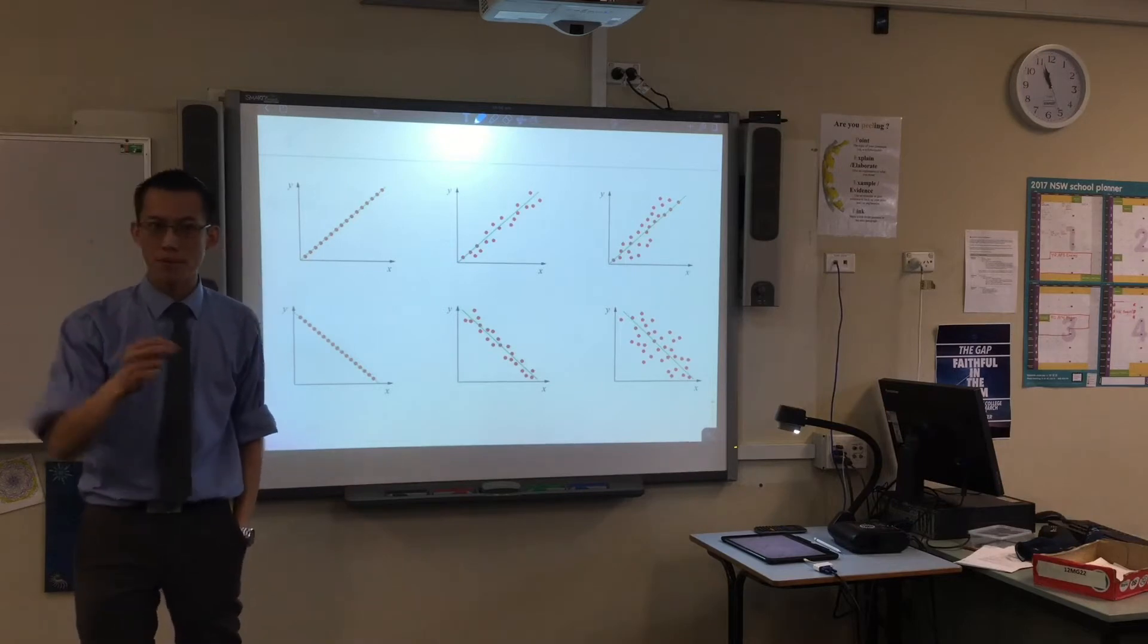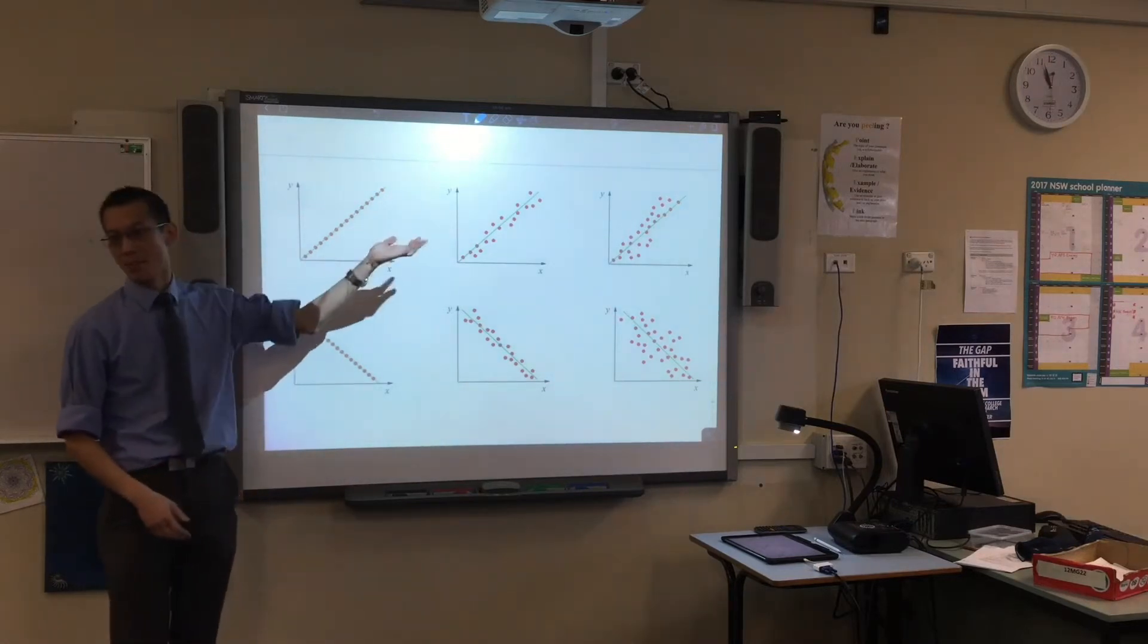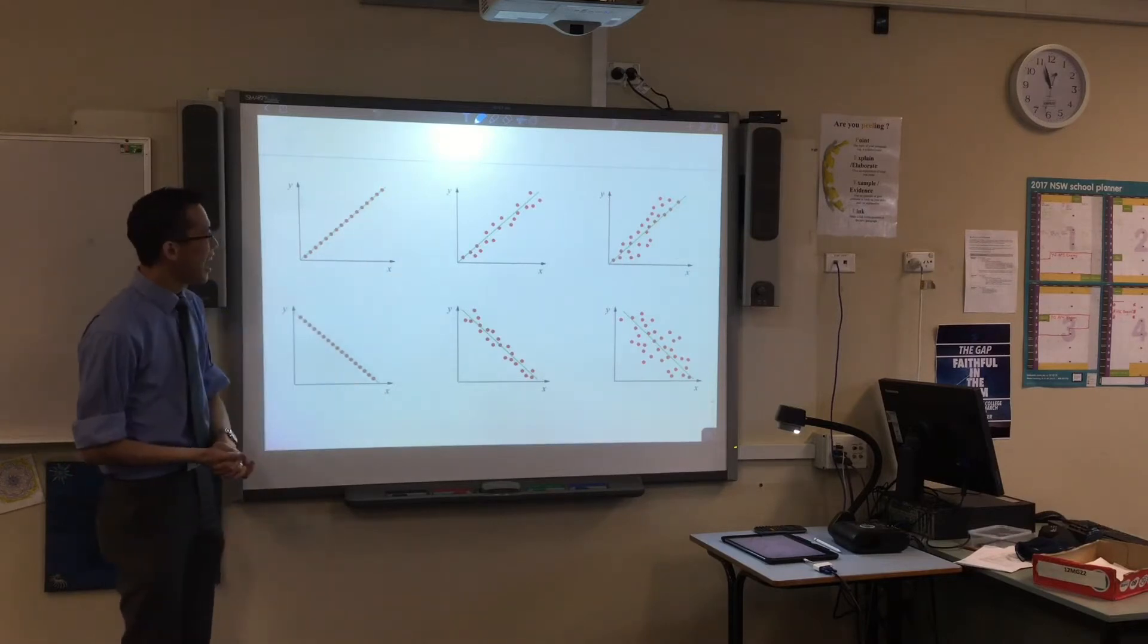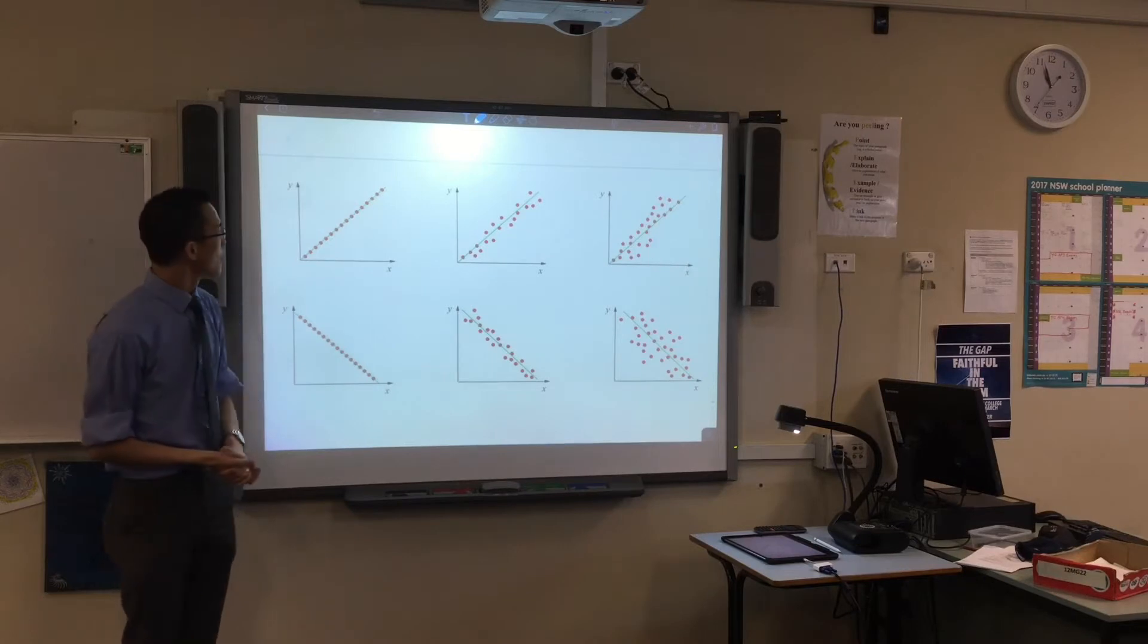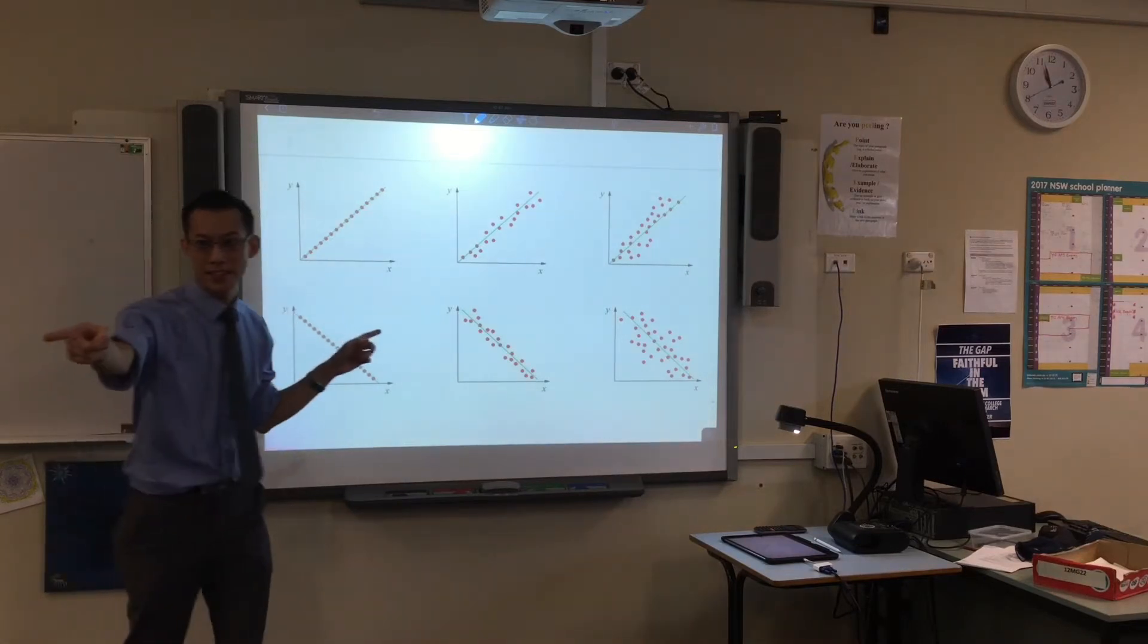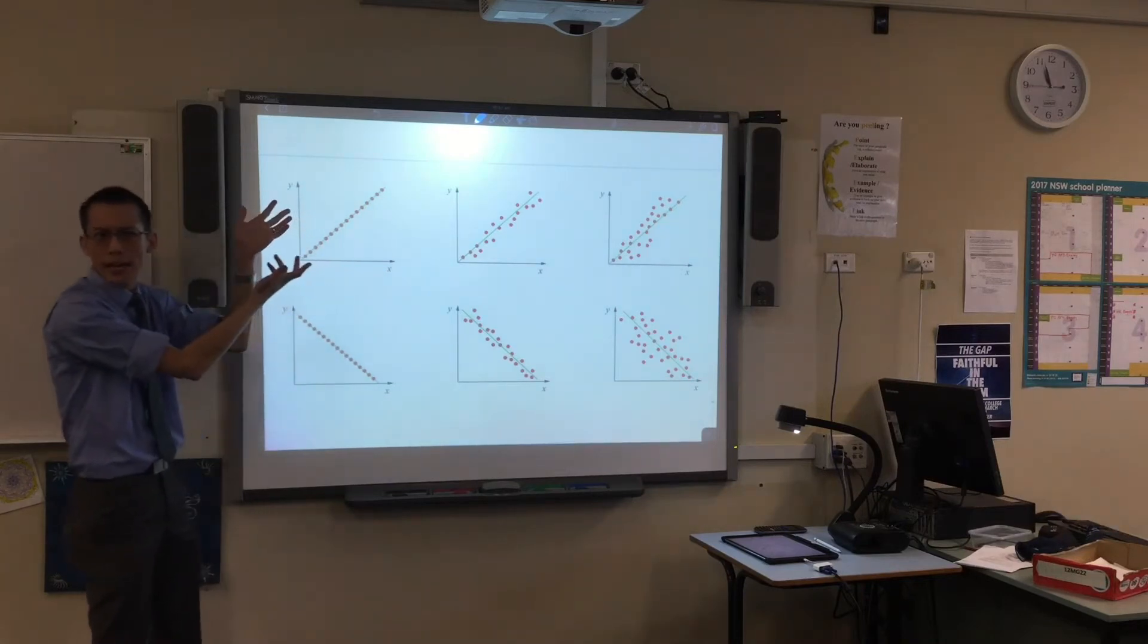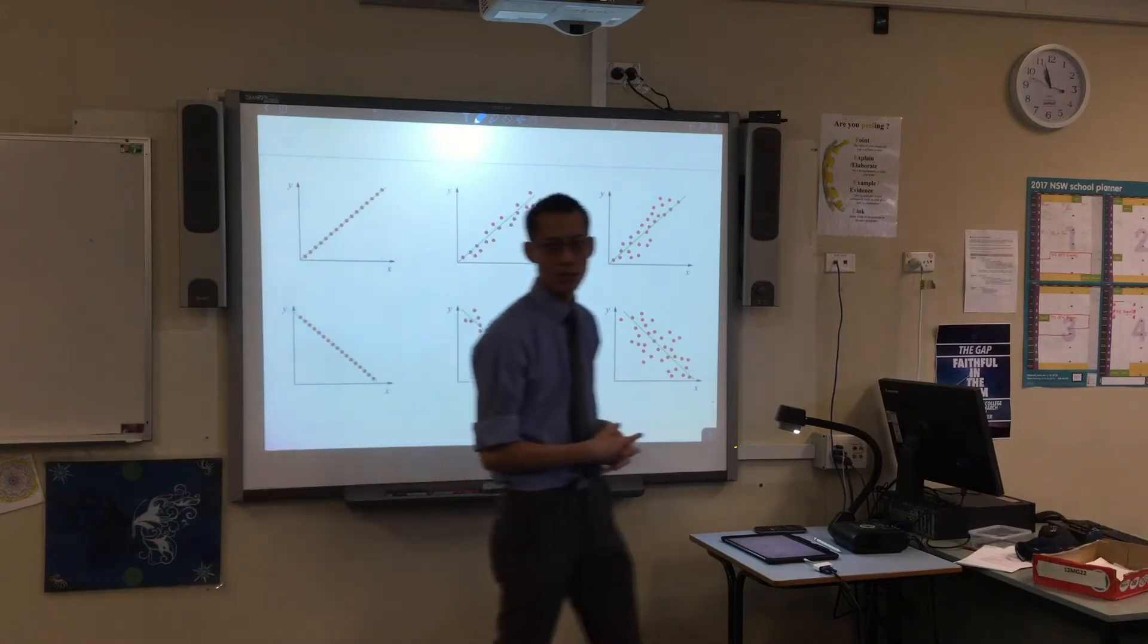These are the data. Each point represents one piece of data which is why they're often called data points. Original, I know. There are two axes. What I heard firstly x and y, that's how they're labelled, but what might x and y be? What could they actually represent? Any suggestions?